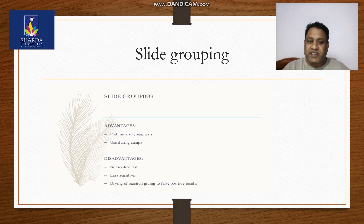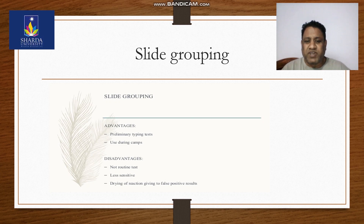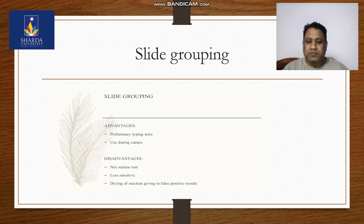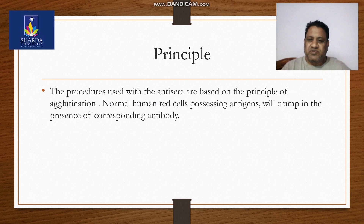Today we are going to discuss slide grouping. It is a very simple and handy procedure. It can be used in blood banks when technicians go to the field for camps and have to immediately conduct blood grouping for a large number of people. The advantage is it is used for preliminary typing tests and during camps. The disadvantages are it is not a routine test, less sensitive, and drying of reactions can give false positive results.